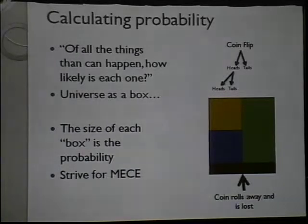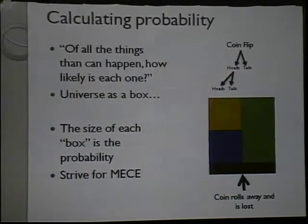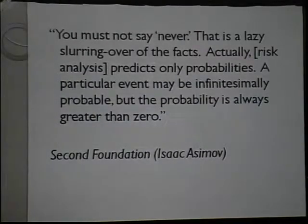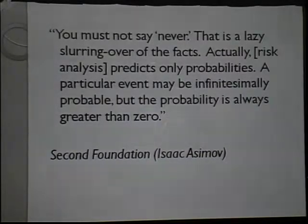You always want to strive for MECE — mutually exclusive and collectively exhaustive. No events overlap, and you account for other things that might happen, like the coin rolling away. You want to fill the entire box and make your universe as complete as possible. As Asimov wrote in his Second Foundation: you must not say never — risk analysis predicts only probabilities. A particular event may be infinitesimally probable, but the probability is always greater than zero. Zombie Hitler could come back tomorrow: not probable, but possible.